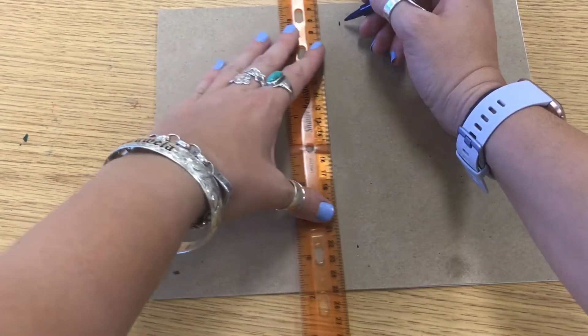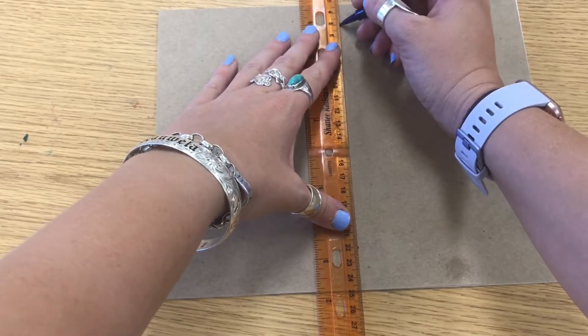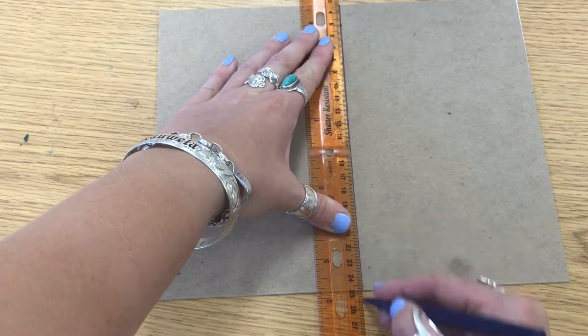You're going to put your pencil on your first mark and line up your ruler to the second mark to draw a straight line.